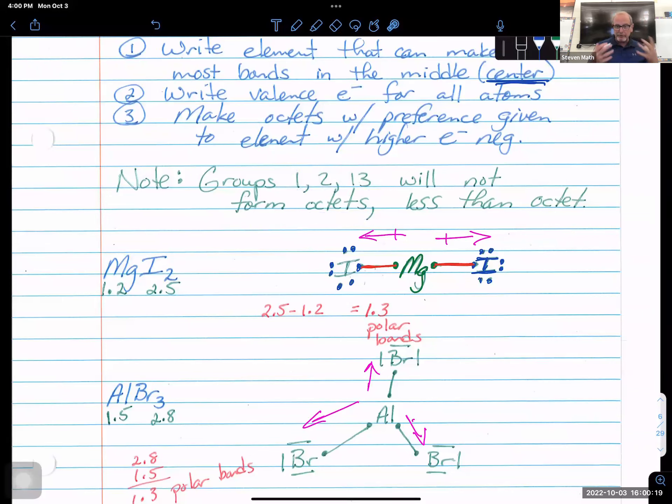They can't. They just don't have enough valence electrons to do that. But look at rule three. The preference goes to the element with the higher electronegativity. So magnesium is not getting an octet. Not at all. Iodine is getting an octet. How come? Because iodine has the higher electronegativity, the higher attraction, the pull for those electrons.